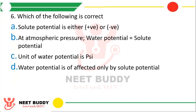Question 6: Which of the following is correct? Option A: solute potential is either positive or negative. Option B: at atmospheric pressure, water potential equals solute potential. Option C: unit of water potential is psi. Option D: water potential is affected only by solute potential. The correct answer is statement B — at atmospheric pressure, water potential equals solute potential.